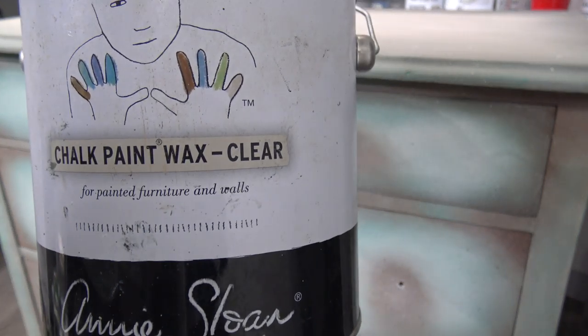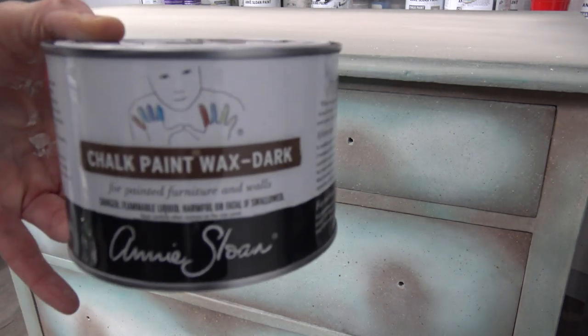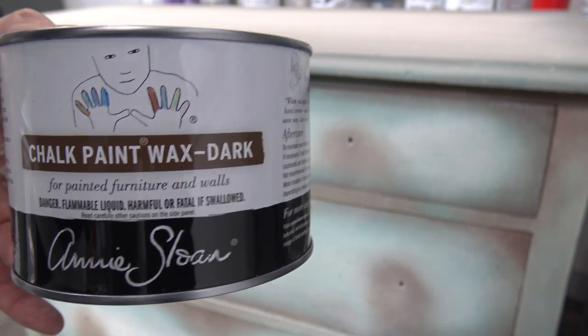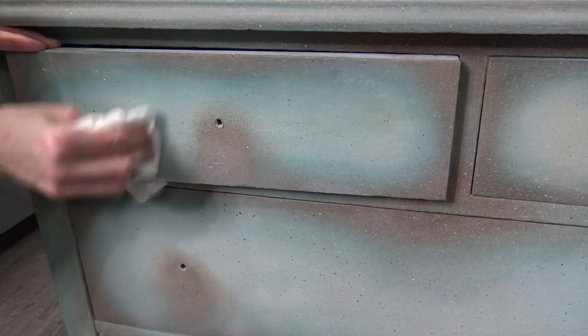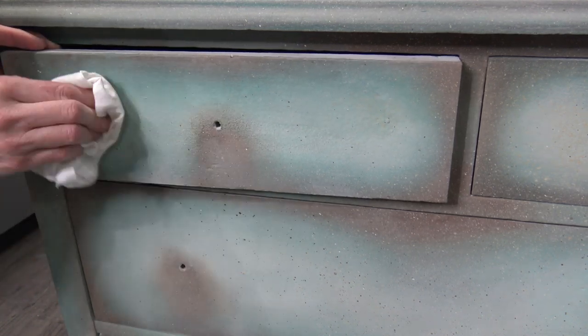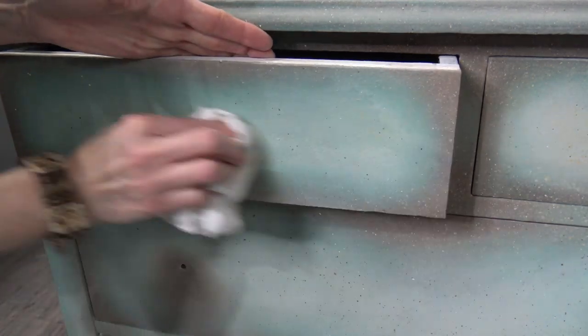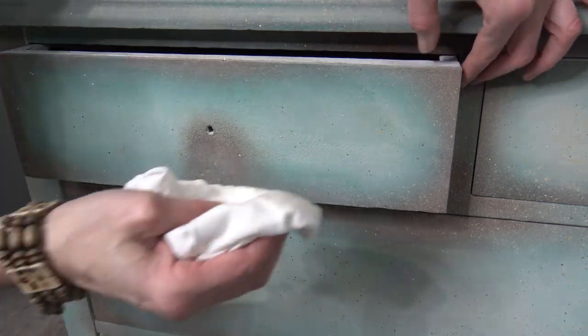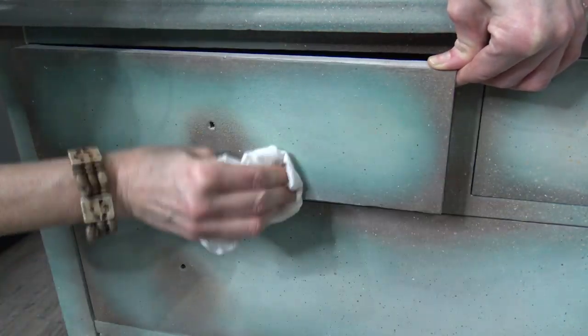I am just going to show you a quick demo on a drawer. Clear wax is just going to seal your chalk paint. When you put it initially on, it's like a moisturizer—it kind of enriches the color a little bit. But it will still dry to a nice chalk matte finish and a little bit lighter like you originally had it.